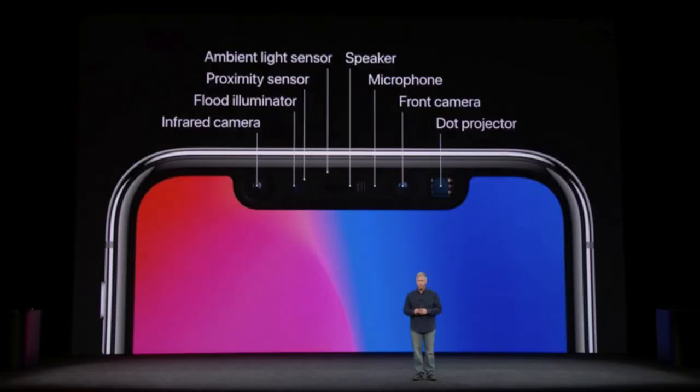The next sensor is the Ambient Light Sensor. If you look at your phone, you can see a little dot. It measures the ambient light level so the screen brightness can adjust accordingly.